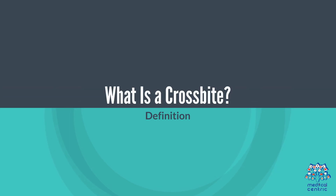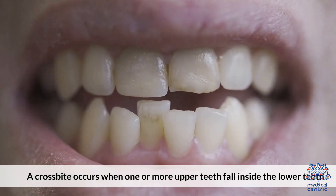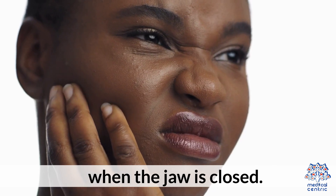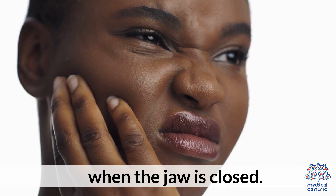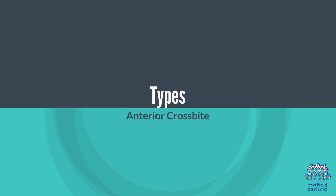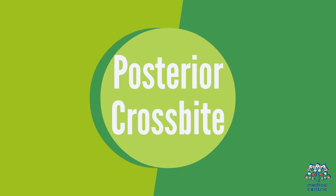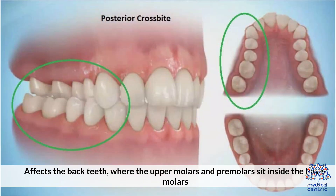What is a crossbite? A crossbite occurs when one or more upper teeth fall inside the lower teeth when the jaw is closed. There are two types: anterior crossbite, which affects the front teeth where the upper front teeth sit behind the lower front teeth; and posterior crossbite, which affects the back teeth where the upper molars and premolars sit inside the lower molars.